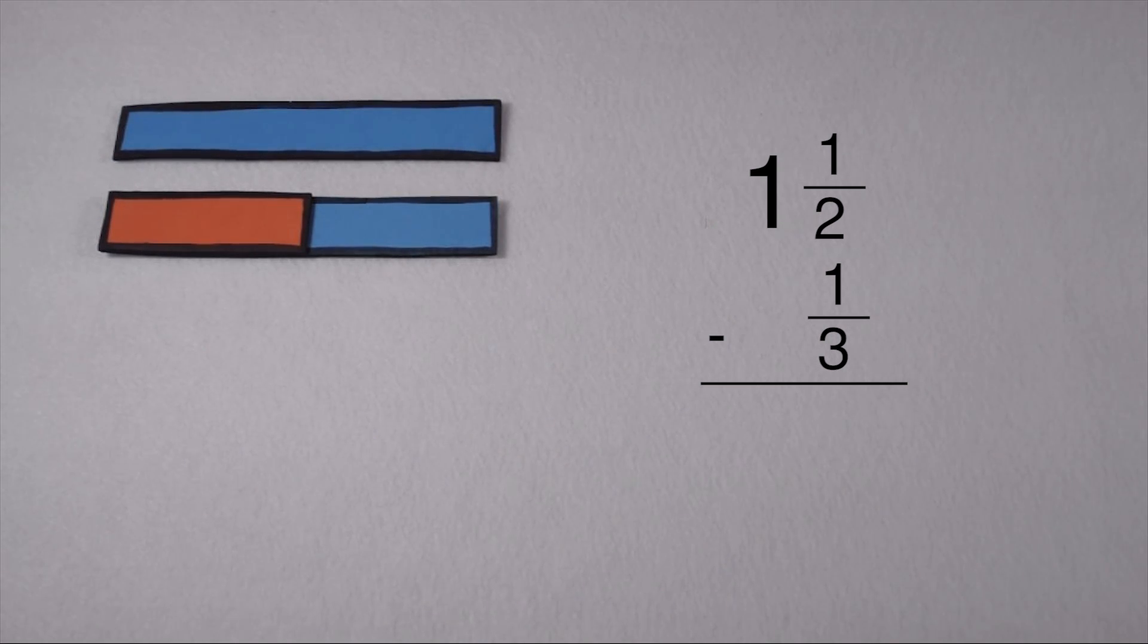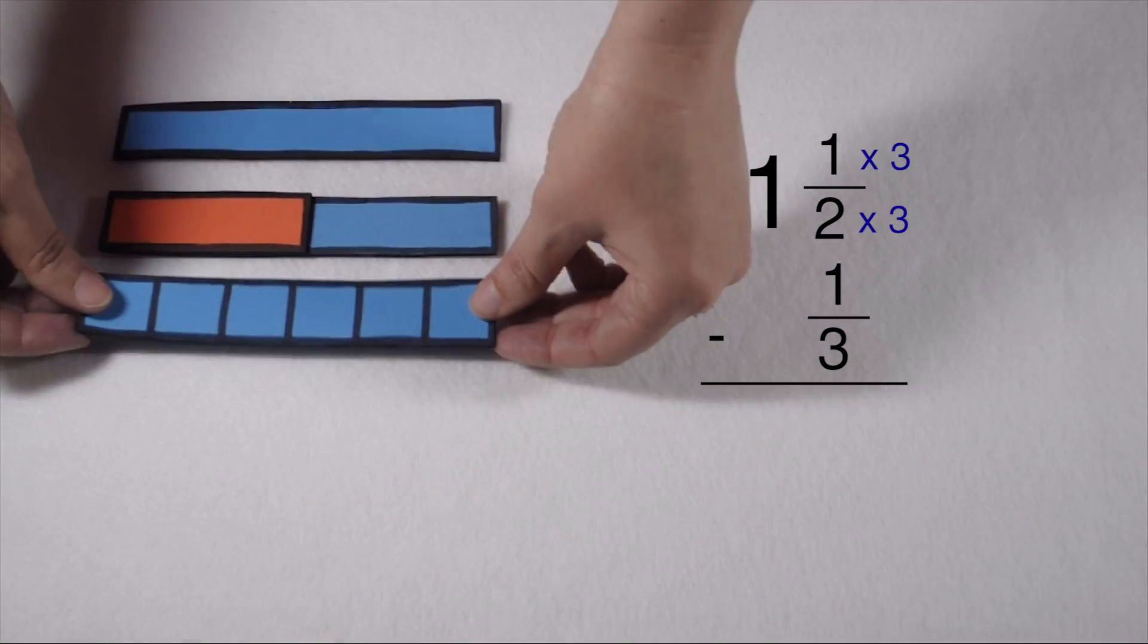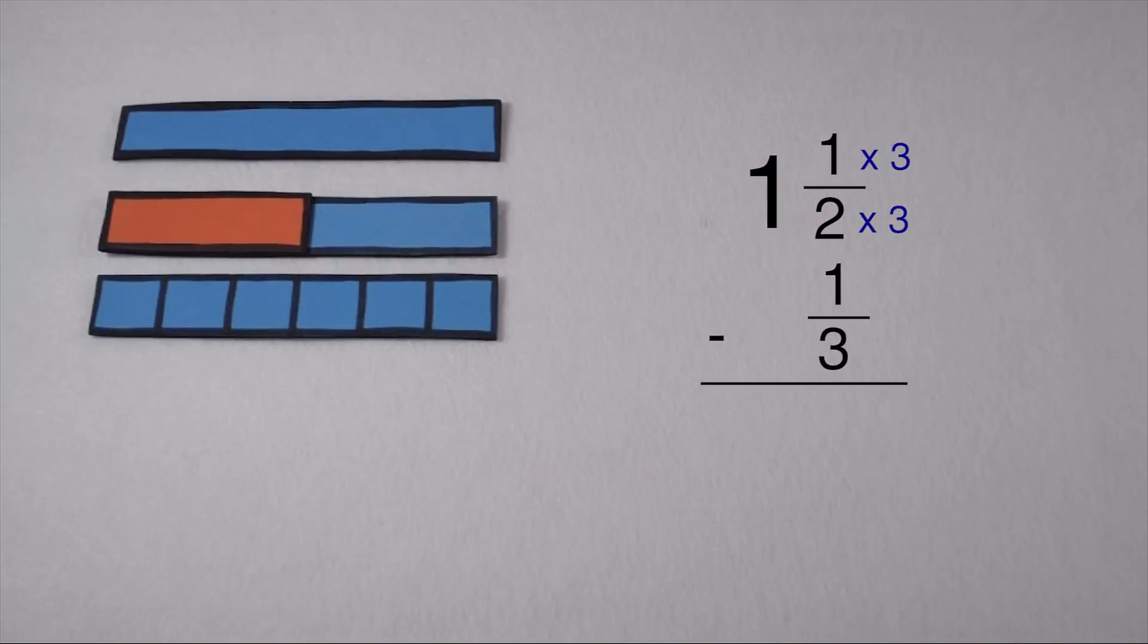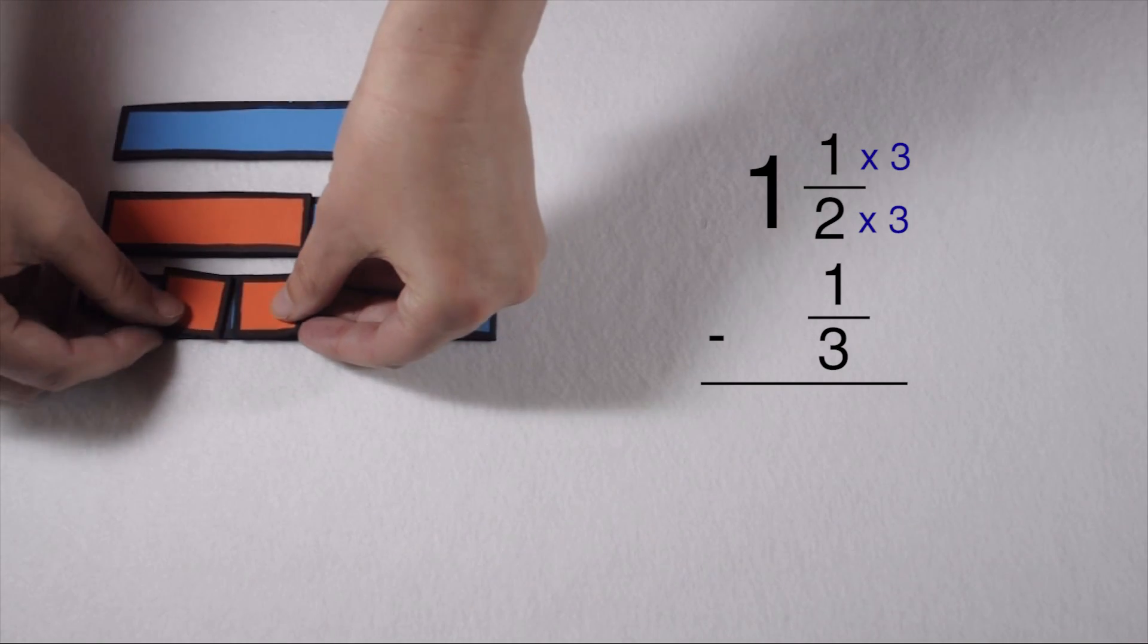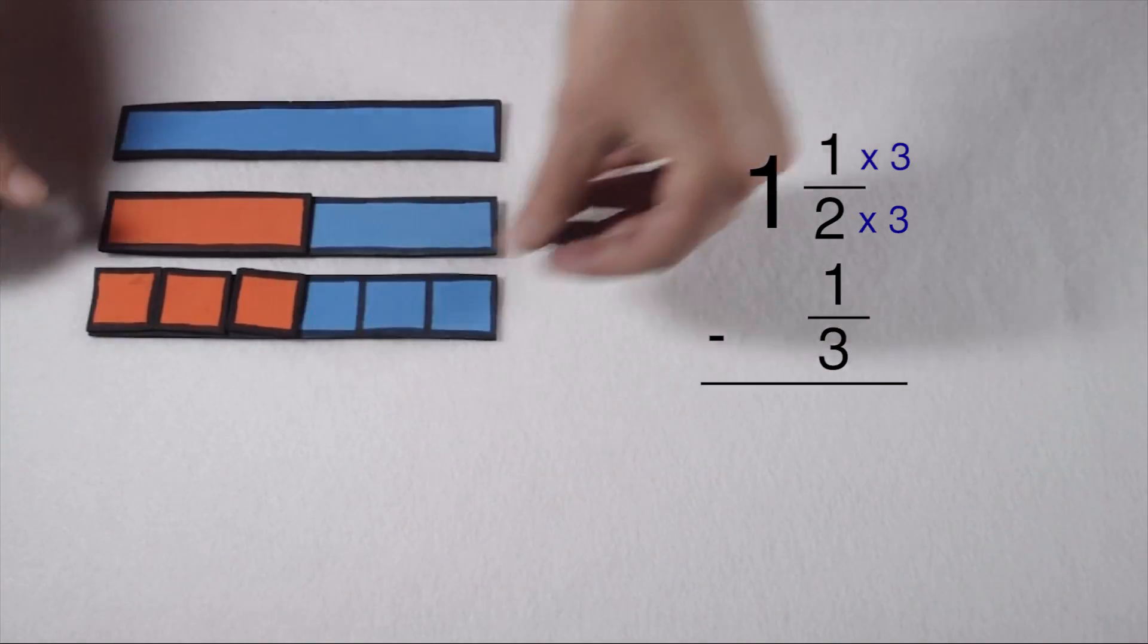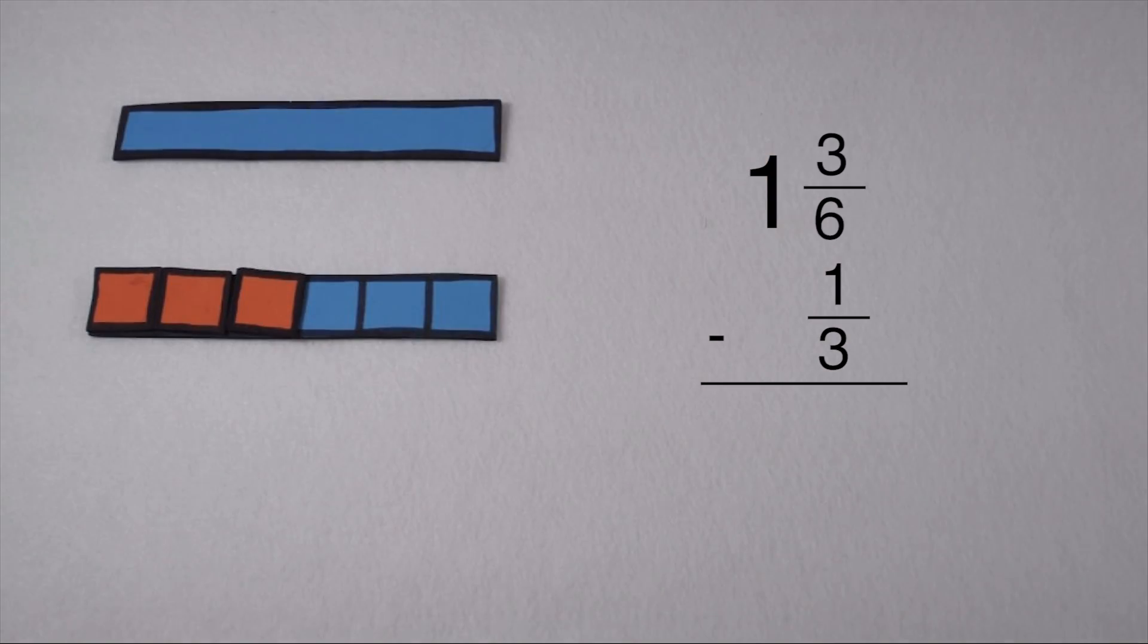To get from 1 half to 6, I multiply my denominator of 2 by 3 to give me 6. Since I multiplied my denominator by 3, I need to multiply my numerator by 3 as well. 1 times 3 gives me 3, so 1 and 1 half is equivalent to 1 and 3 sixths.